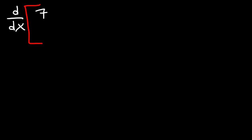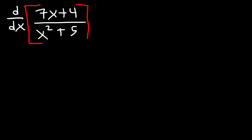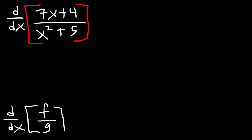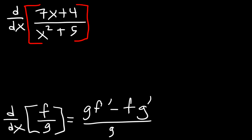Let's say we want to find the derivative of 7x plus 4 divided by x squared plus 5. How can we find the derivative of a function in a fraction? We need to use something called the quotient rule. The formula is: the derivative of f divided by g is equal to g times f prime minus f times g prime, divided by g squared.